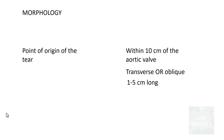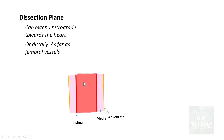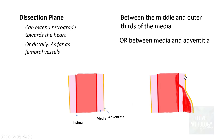Morphologically, the point of origin of the tear is usually within 10 cm of the aortic valve. It is transverse or oblique, usually around 1 to 5 cm long, and almost always has sharp, jagged edges. Once the dissection occurs, blood can extend either retrograde towards the heart or distally as far as the femoral vessels. The plane of dissection is almost always between the middle and outer third of the tunica media, or it can be between the tunica media and the adventitia, but the most common plane is between the middle and outer third of the tunica media.